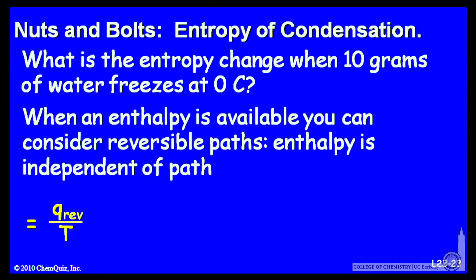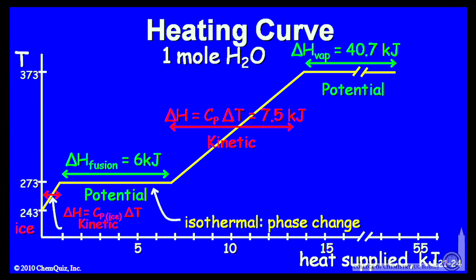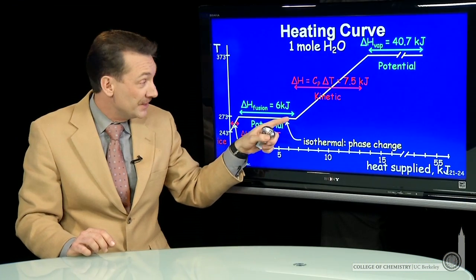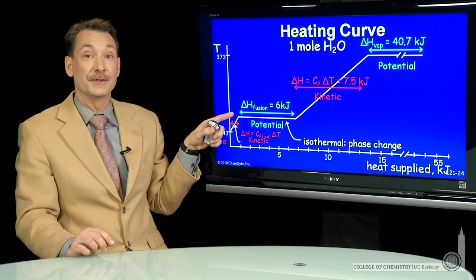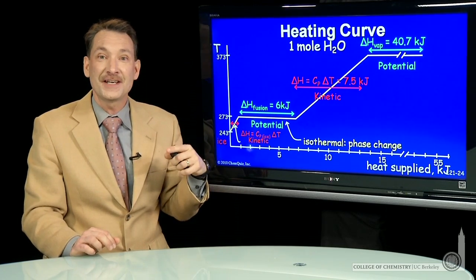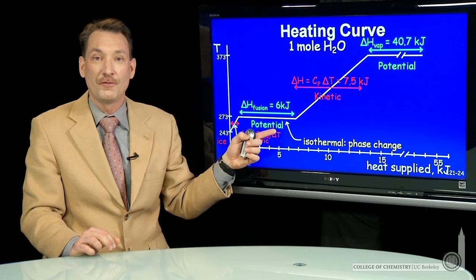The heat evolved at a constant temperature for the freezing can be calculated by the enthalpy of fusion over the melting point. So here's the heating curve for water. And recall when water melted, or in this case, we're going to freeze it. So we're going to go this direction. You would evolve for freezing, give off six kilojoules per mole of water.